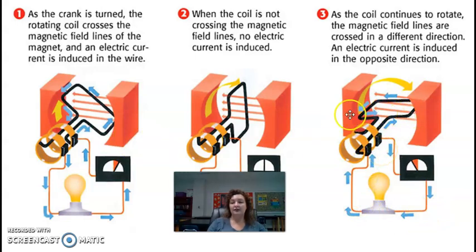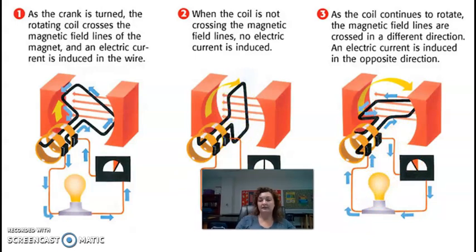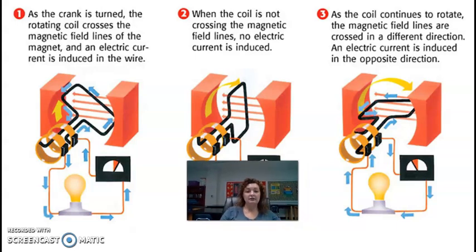So whenever it's kind of flat, we're producing electricity. But when it's up and down, it is not. See, the light bulb is not on. So I want to show you a simulation that you could probably understand this a little bit better.